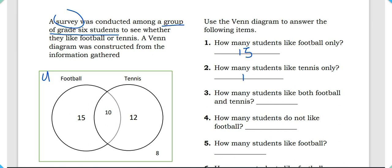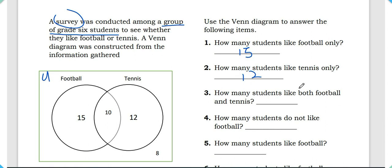Question two: how many students like tennis only? The answer is 12, because in our tennis subset we can see there are only 12 students in the area that applies only to tennis.